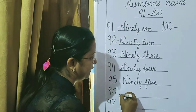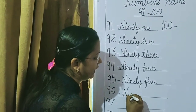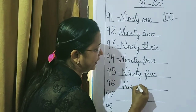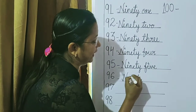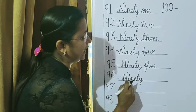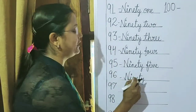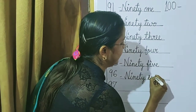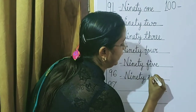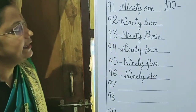Then, 96. N-I-N-E-T-Y for 90. Then, 6 — S-I-X. So that is 96.